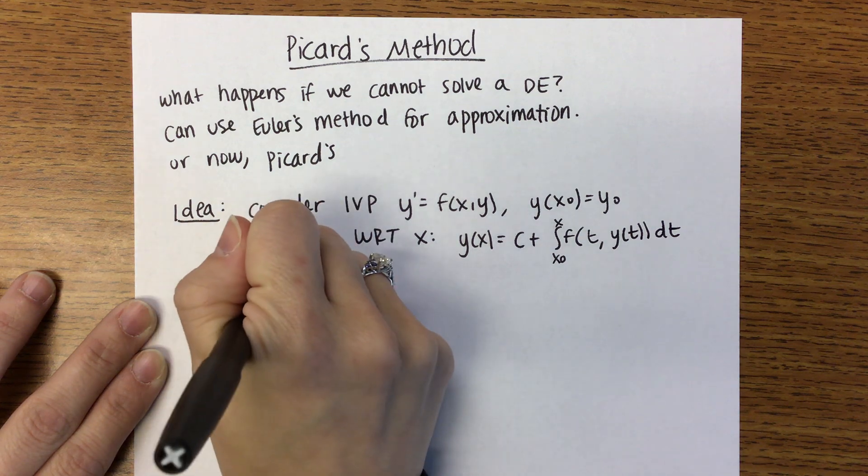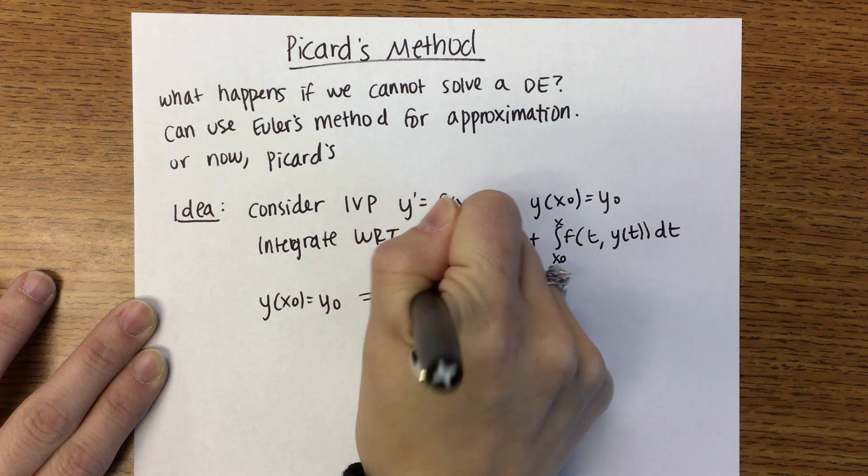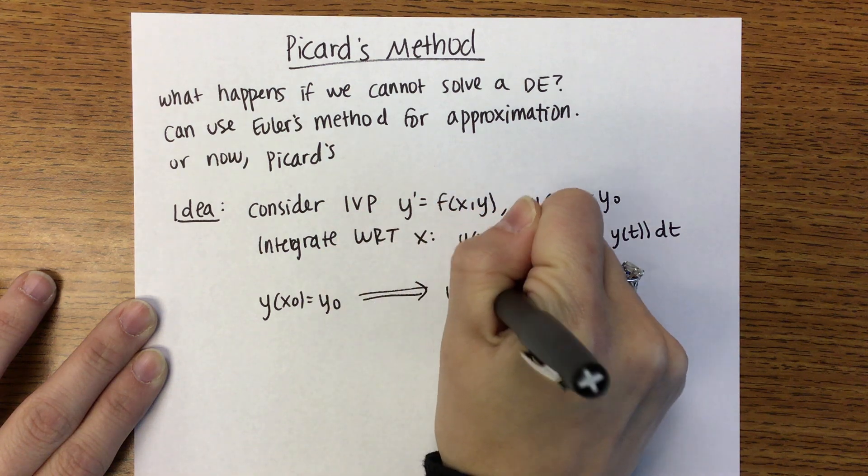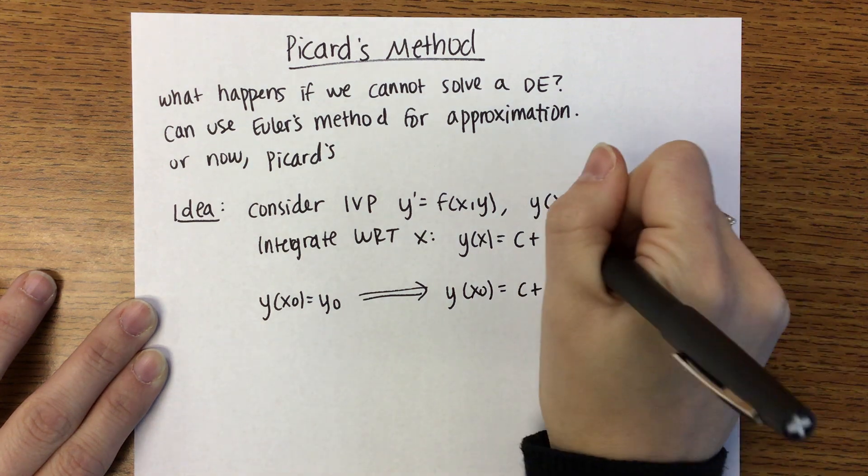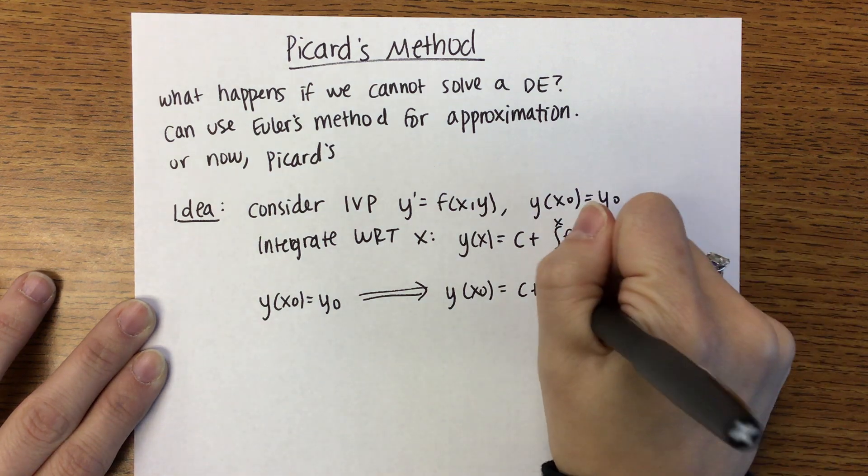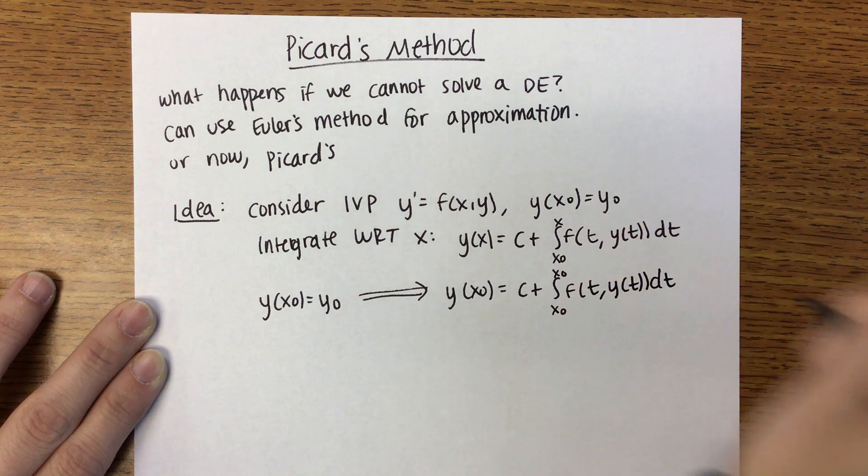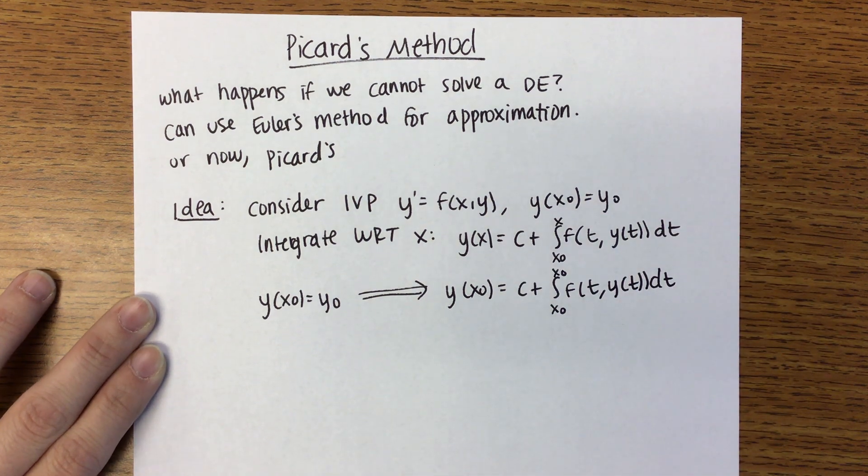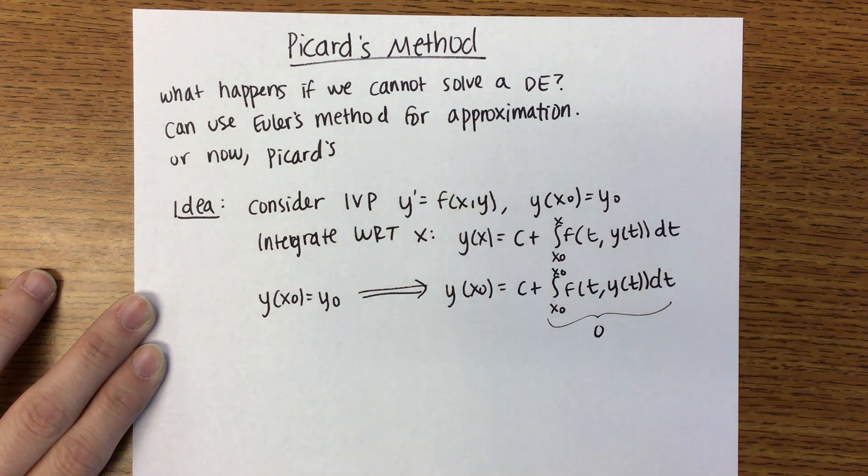Then you have that initial condition that Y of X0 is equal to Y0. So we're going to plug that in. We get Y of X0 is equal to C plus X0 to X0, because that's what we're plugging in for X, F of T, Y of T, DT. This we should be able to tell is 0, which tells us that C is equal to Y0.